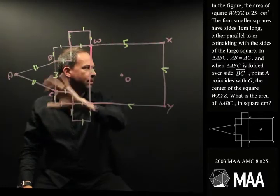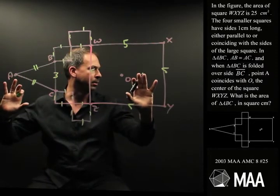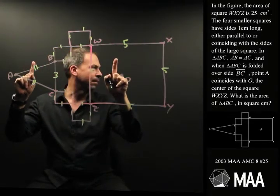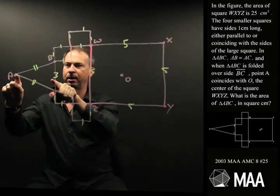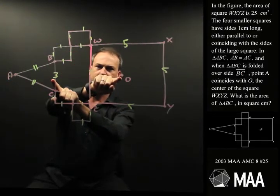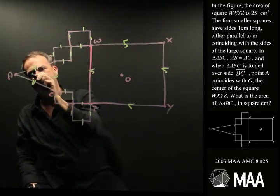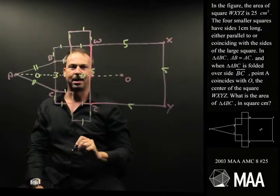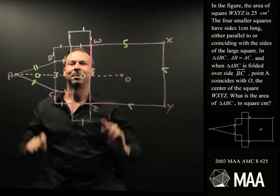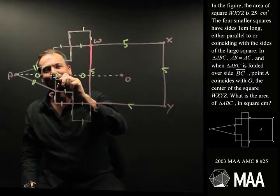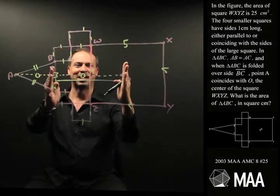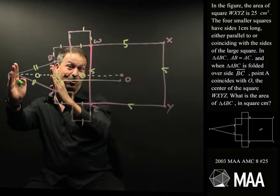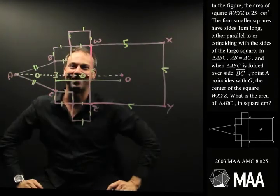The sides of the small squares are parallel and coinciding — that's no new information. This triangle is isosceles: AB equals AC. The only other thing I haven't used yet is that when I fold this triangle over, point A lands on point O. So that means the height of this triangle has to be the same as that length there. I bet I do know this length — I feel like all the information is there to find that length, in which case I know the height of the triangle. And if I know the height and the base, I can work out the area of the triangle.